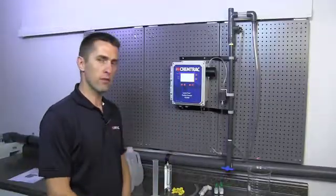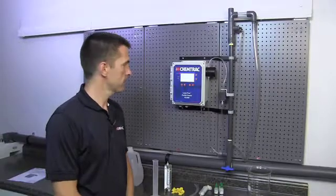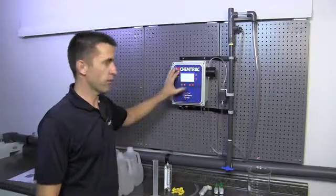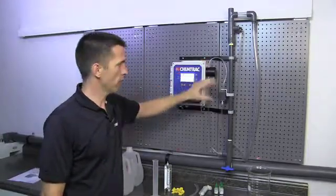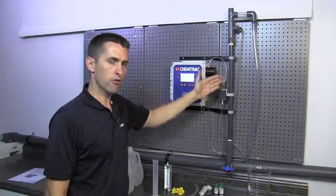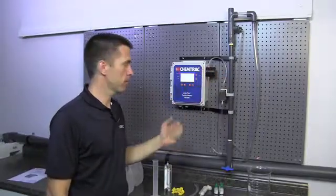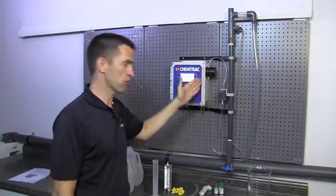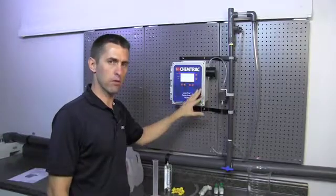Here we have a typical installation of a ChemTrack particle counter. We have the particle counter itself with the external flow cell and the flow control weir. The flow control weir provides a constant head pressure to the sensor to maintain a flow rate of 75 milliliters per minute.